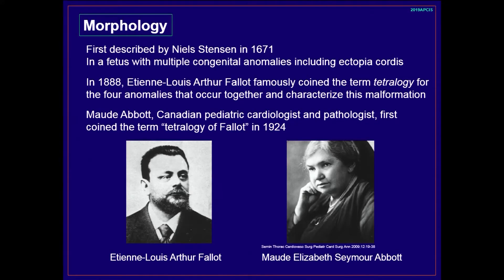The morphology of tetralogy of Fallot was first described by Niels Stensen in 1671. Stensen was a Danish anatomist and naturalist. In 1888, a French doctor, Dr. Fallot, described the morphology in detail and first used the term 'tetralogy' for these anomalies. Dr. Abbott, a Canadian pediatric cardiologist, used the term 'tetralogy of Fallot' in 1924, because it was simpler and more convenient than describing all four anomalies.